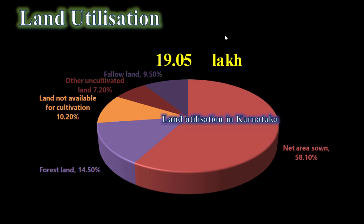The breakdown of land use in Karnataka: fallow land 9.50 percent, other uncultivated land 7.20 percent, land not available for cultivation 10.20 percent, forest land 14.50 percent, and net area sown 58.10 percent. This is the availability of land utilization in Karnataka.